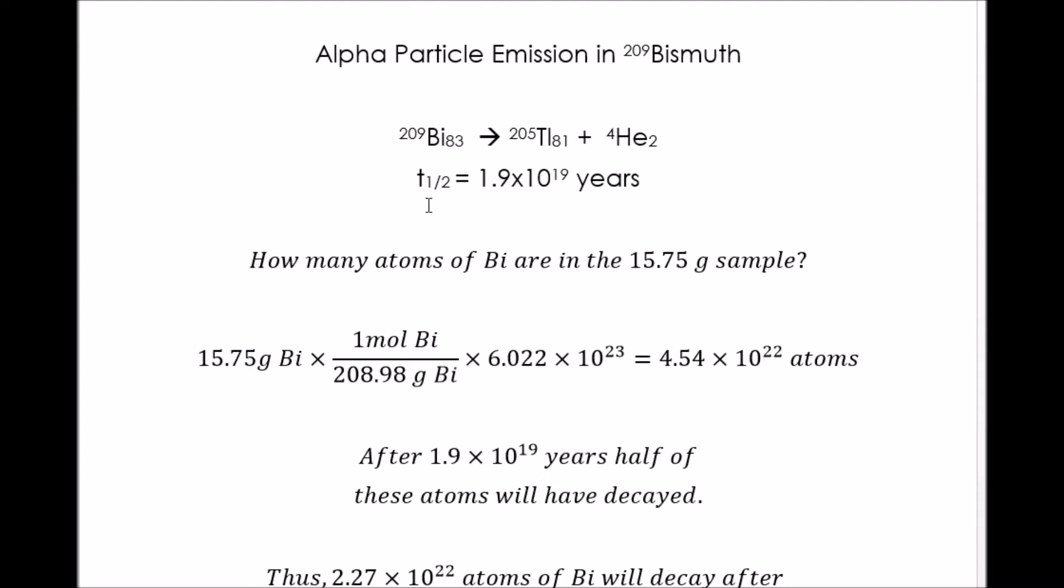Our sample, as I said, was 15.75 grams. Using the factor label method, we're going to convert that to moles and then to atoms. We multiply by one over the atomic weight, and then we multiply by Avogadro's number to get the number of atoms in the sample.